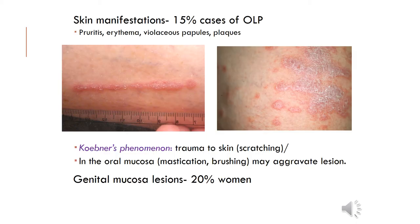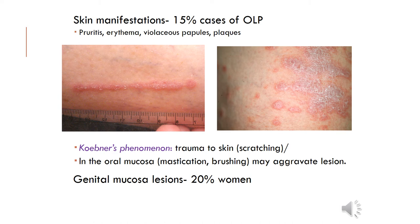Lichen planus is a dermatological disorder; skin manifestations occur in 15% of cases that start as oral lichen planus. Features include pruritus, erythema, and violaceous papules and plaques. Köbner's phenomenon means that when skin gets traumatized — for example, by scratching — a new lesion develops; this can also happen in the oral cavity due to constant trauma during eating and brushing, aggravating the condition. Genital mucosal lesions are seen in 20% of women with oral lichen planus, so as a dentist you should ask the patient about skin or genital lesions as well.